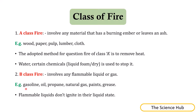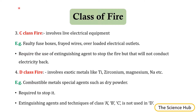Class B fires involve any flammable liquid or gas. Gasoline, oil, propane, natural gas, paint, or grease cause this kind of fire. Note that flammable liquids don't ignite in the liquid state. Class C fires involve live electrical equipment — for example, faulty fuse boxes, frayed wires, and overloaded electrical outlets. Extinguishing agents that will not conduct electricity back are required.